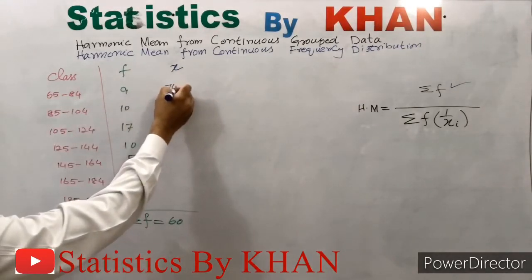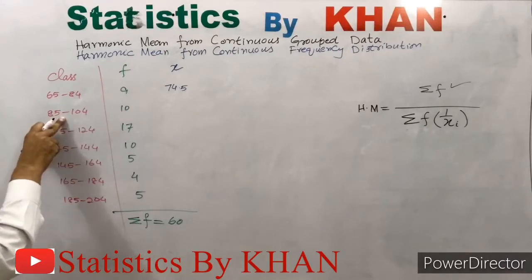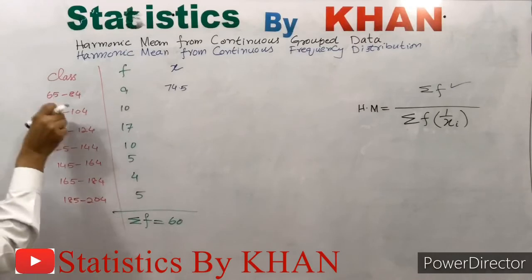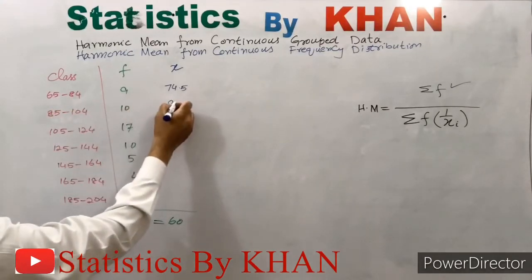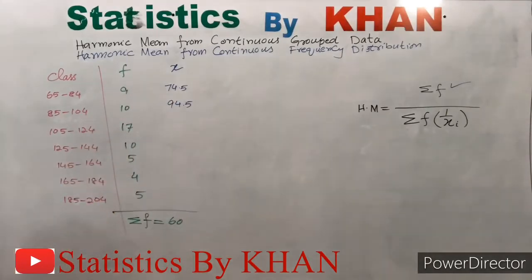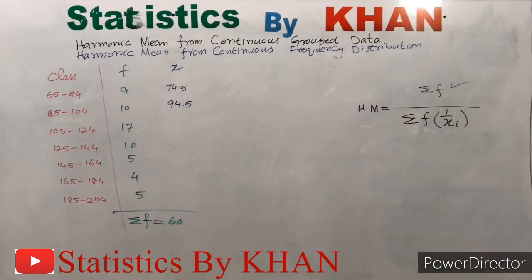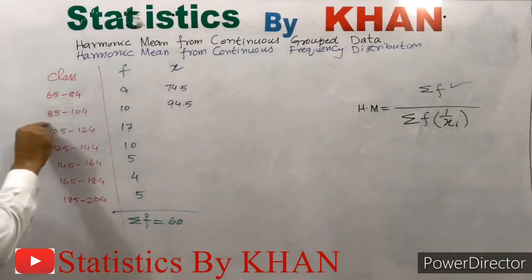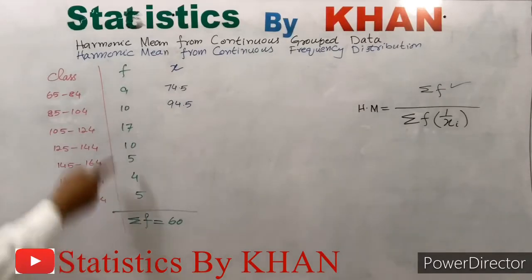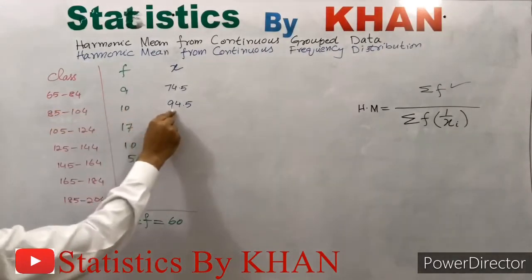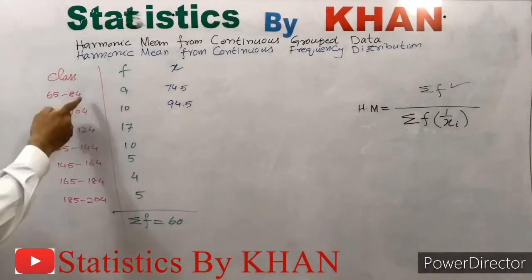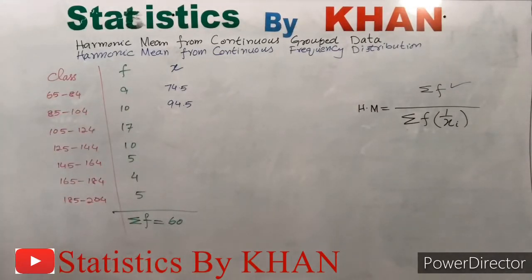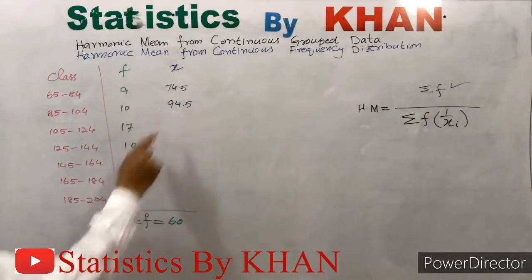Adding the two limits of the first class and dividing by 2 gives us 74.5. Similarly, adding the limits of the second class and dividing by 2 gives 94.5. For the rest of the midpoints, we use the trick discussed in earlier examples: if the class interval is uniform — meaning the interval in each class is identical throughout — we add this uniform class interval to the preceding class midpoint to get the midpoint of the succeeding class. The uniform class interval here is 20.